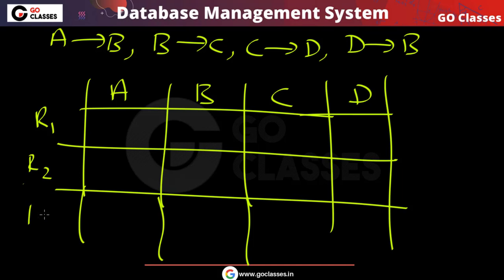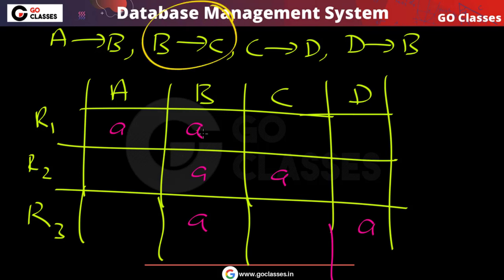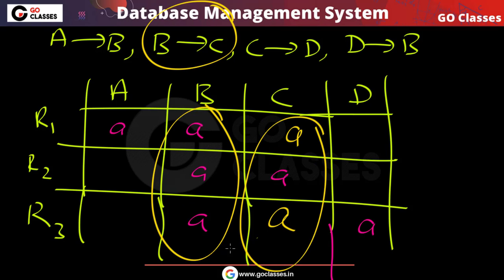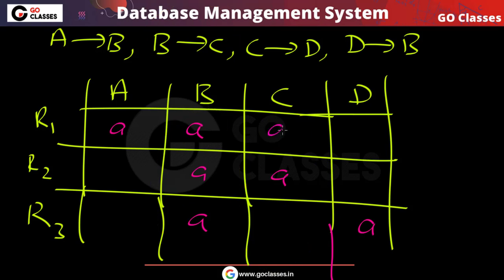For the chase algorithm, the initial setup has four attributes A, B, C, D and three rows for R1(AB), R2(BC), and R3(BD). R1 gets entries a, b for A and B; R2 gets entries for B and C; R3 gets entries for B and D. Applying B→C: since B has the same value in R1 and R2 rows, C must also be the same, so C becomes 'a' in both those rows.